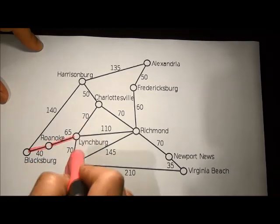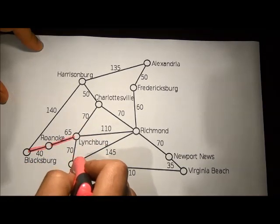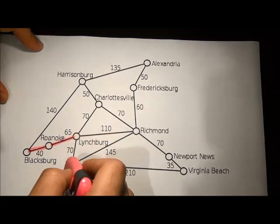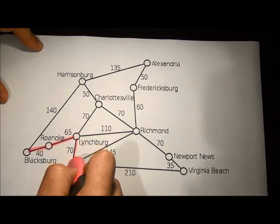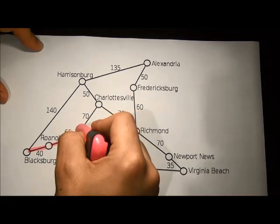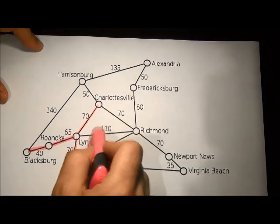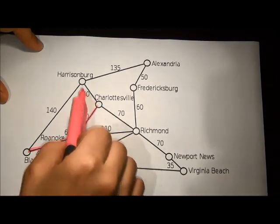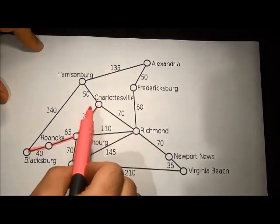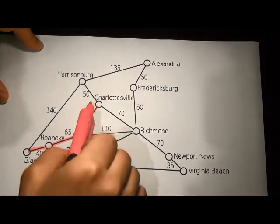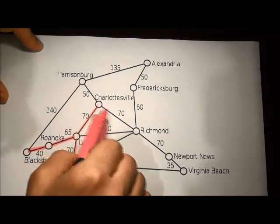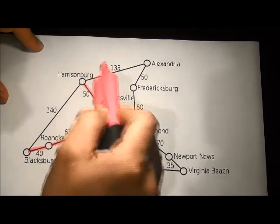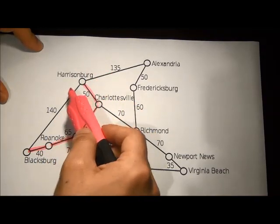Here we have distances of 40 or 140; of course we will choose 40. Then we go to the next city and we have three routes: 70, 110, or 70. We will go with 70 here and 70 here because it is less than 110. Now we can see there is a loop or circle, and we need to be careful, so we can go with 50 or 70. Of course we will go with 50.